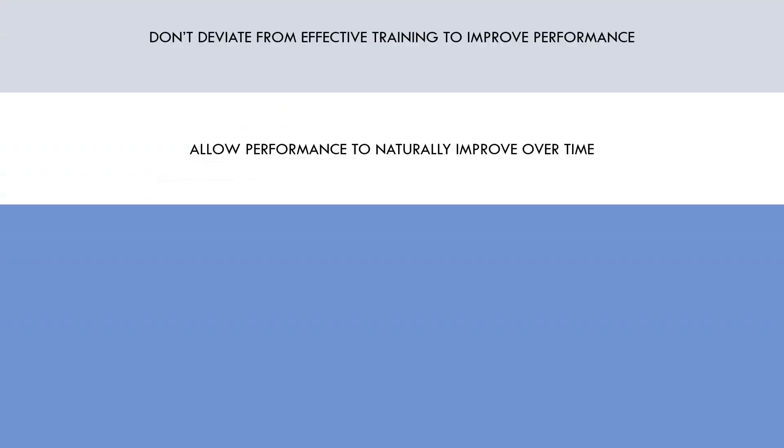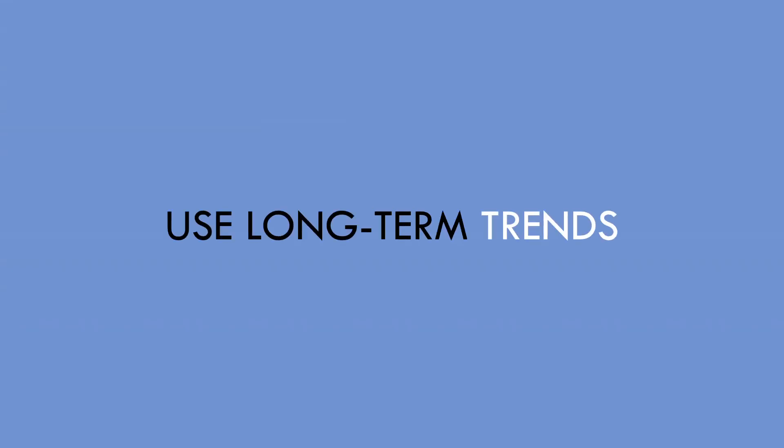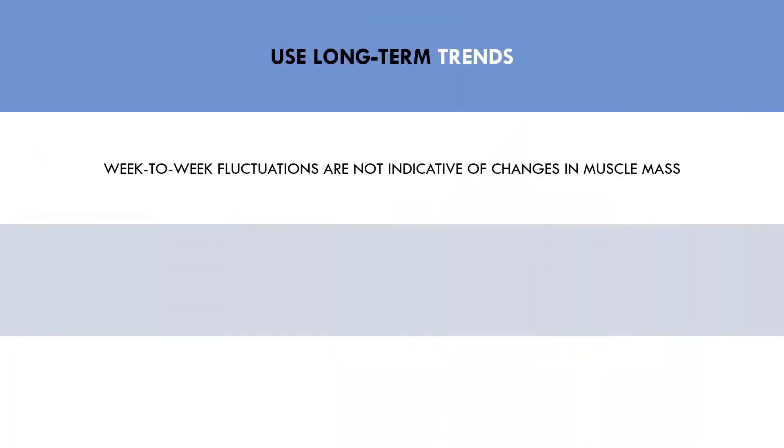And the second implication is to use long-term trends in performance over time as opposed to week-to-week comparisons. As we explored, there are so many variables that can influence lifting performance in the short term, which means that it is not always an even playing field when comparing performance one week to performance the next week. Unless trainees are very new to lifting, it is unlikely that performance will improve every single week. Instead we should be looking at long-term trends in performance over months and years, as this gives us a more accurate representation of how muscle growth is trending. If lifting performance is consistently improving over months and years, then this is a good sign that the trainee is growing muscle now.